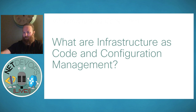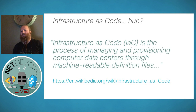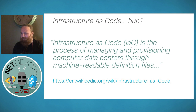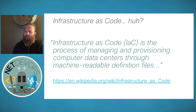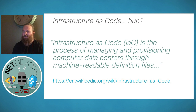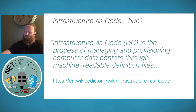Infrastructure as code is the process of managing and provisioning compute data centers through machine-readable definition files. Back in the day when I started my network career, we stored all our network configurations as just the show run on a shared file drive. But as the network grew and people came and left the team, the templates never really got updated. People had their own individual copies, and when you came to replace something, recent changes had been missed. There had to be a better way, and so we started looking towards infrastructure as code.